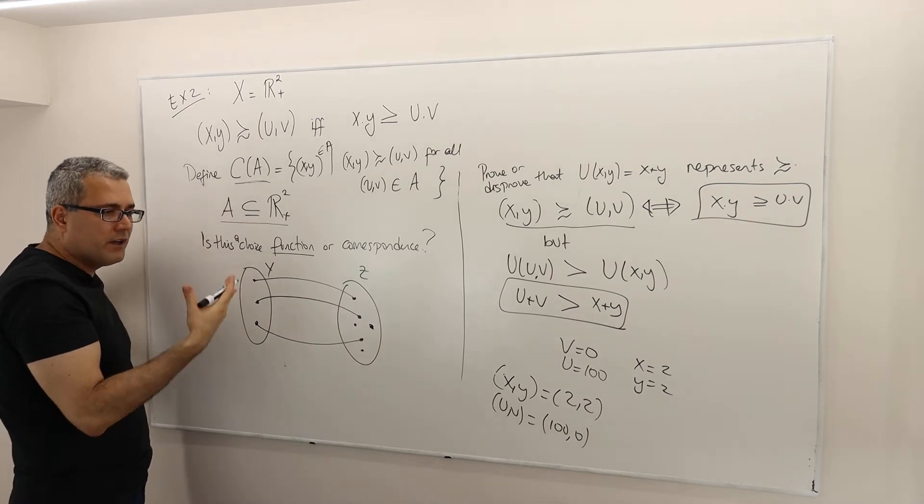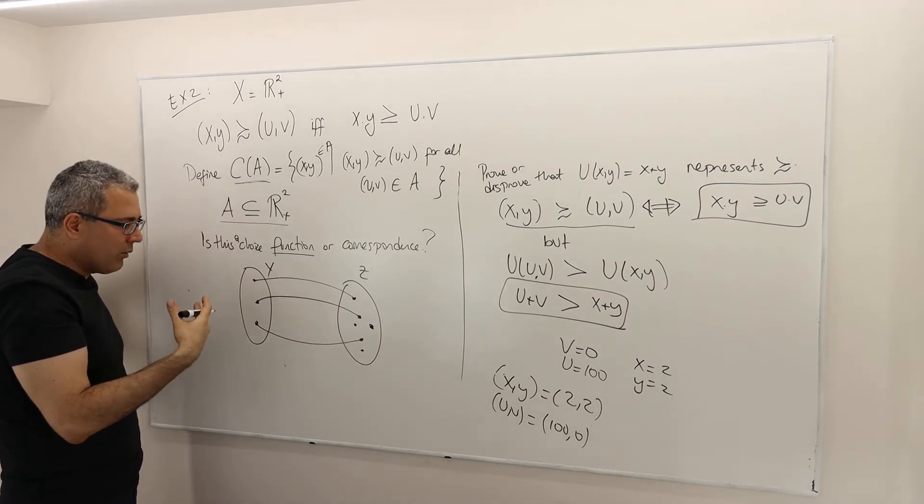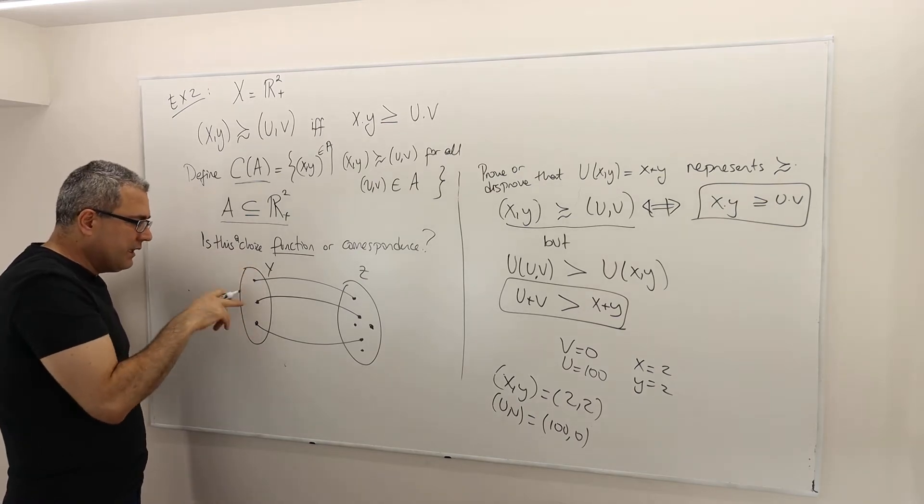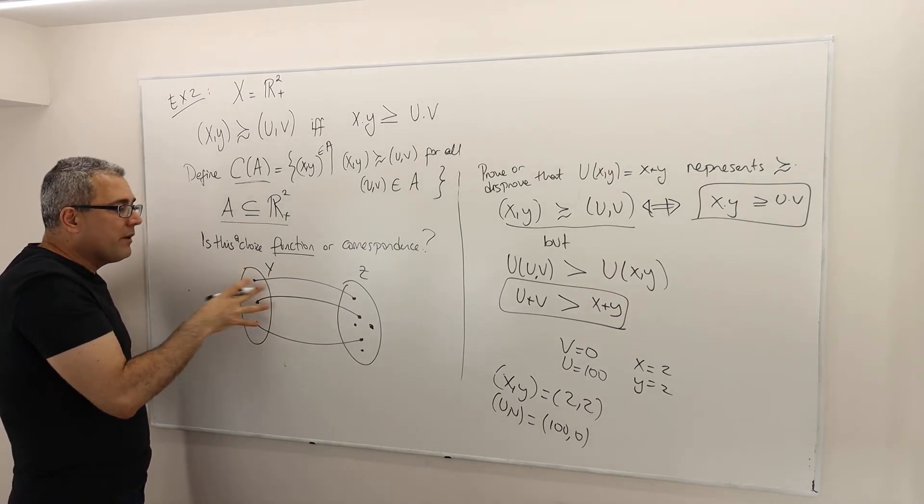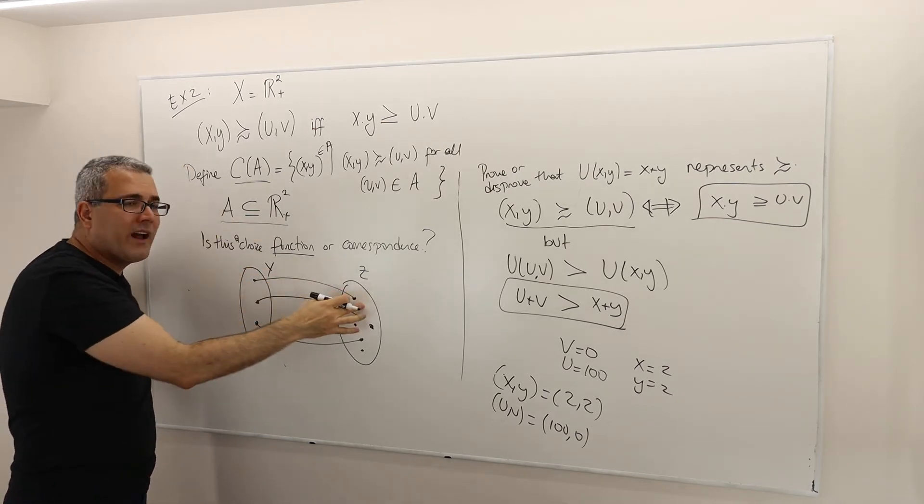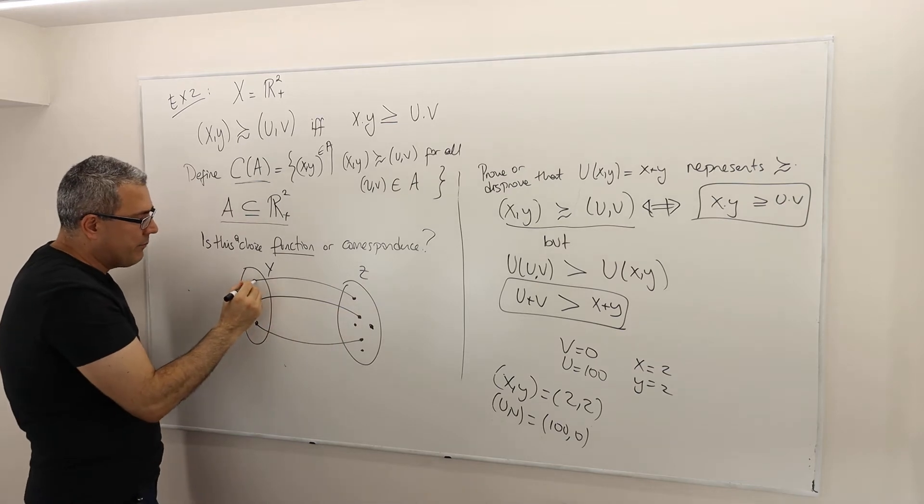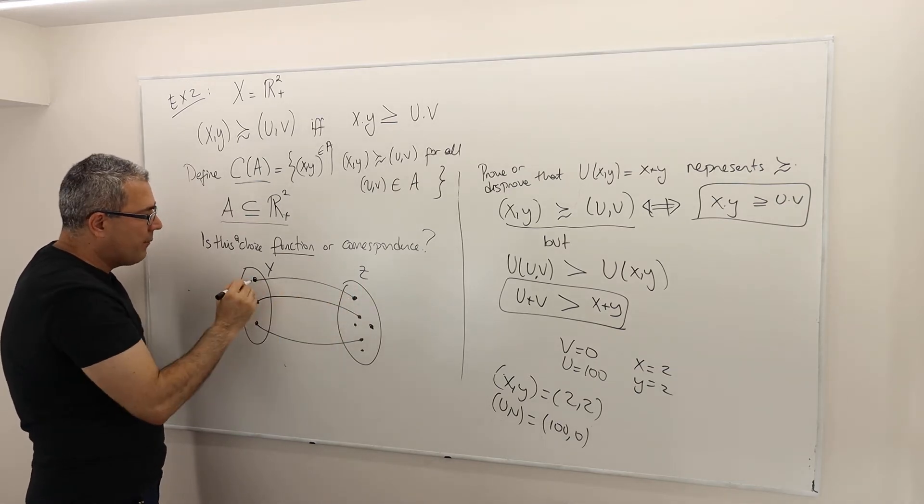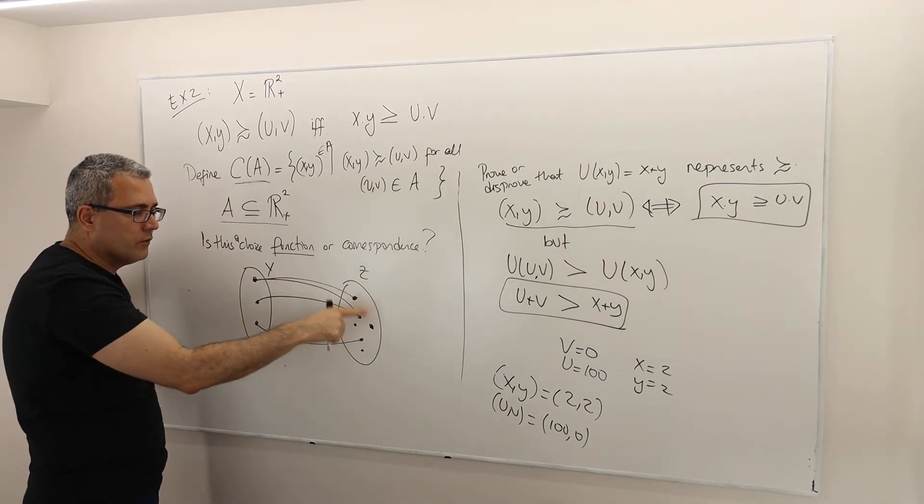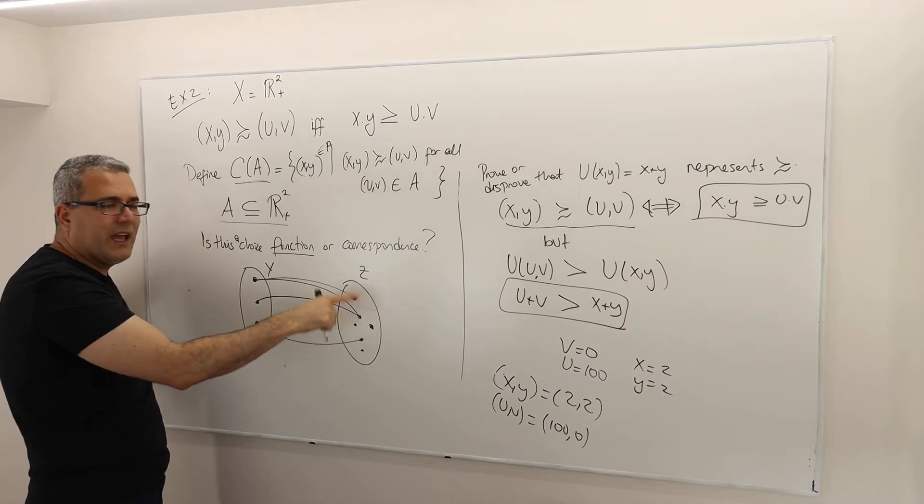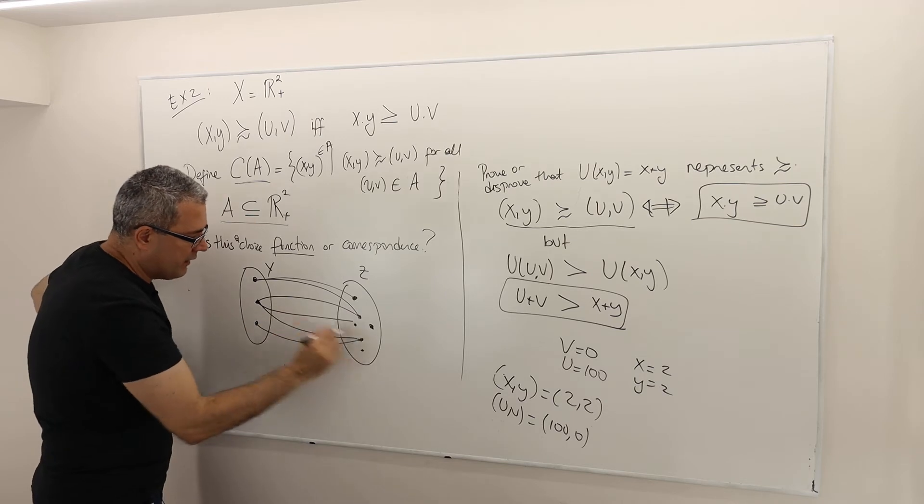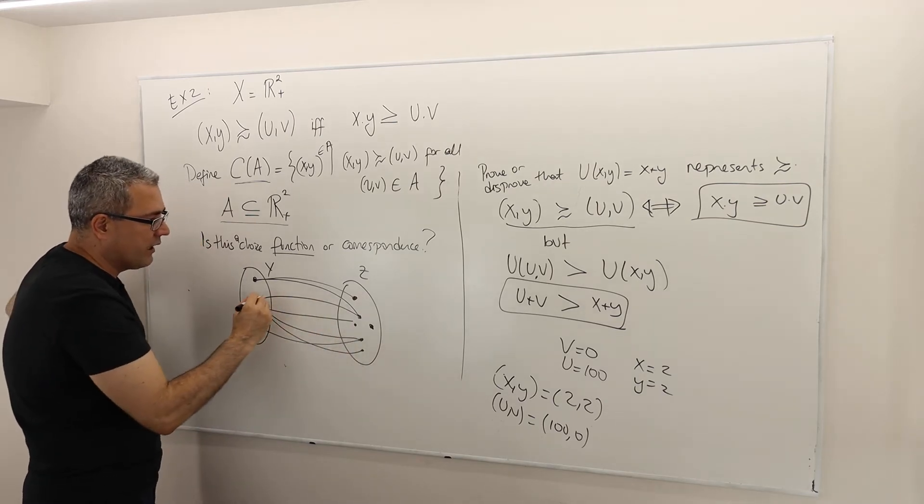So this is what function is. Correspondence, however, maps all of the elements in the domain, but the thing is, it doesn't have to be only one element here. You may, for example, map this guy into this one, but also map it here. So maybe basically you map it to two numbers or two elements in the range, or you may map this to everything in the sets, in the range.